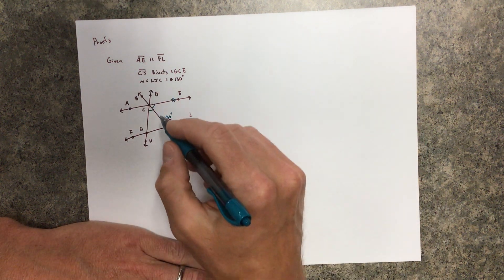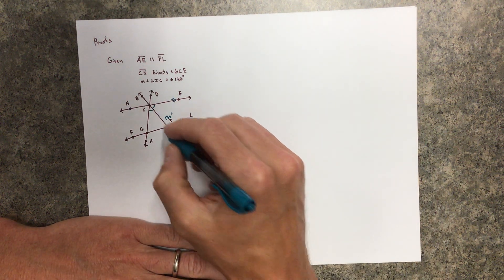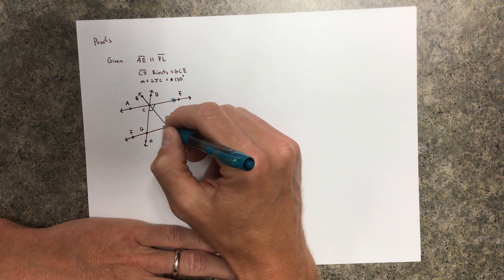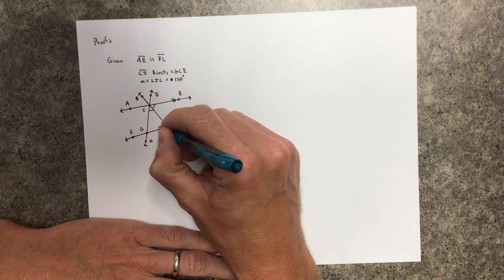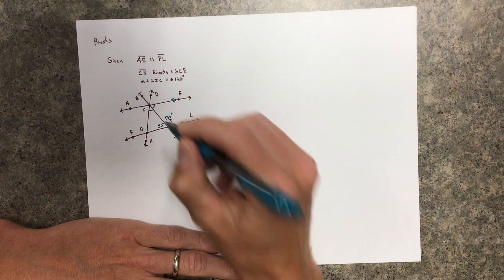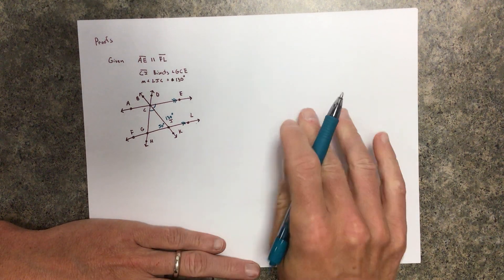The next thing I'm going to do is if this is 130, then I know that this is 50 degrees because of linear pairs. I'm going to write that over in a second.